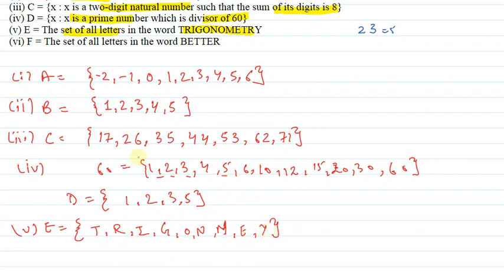So we have represented this set in roster form. Next we have six part. What have we said? That F is a set - the set of all letters in the word better. So which letters are there? If a letter is repeated, we will write it just one time. So which letters are: B, E, T, R. So we have the final answer. I hope you have understood the explanation. Thank you.